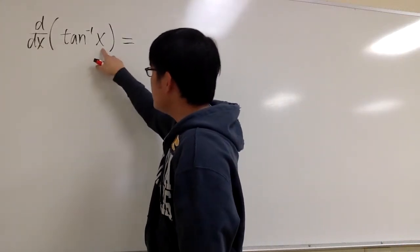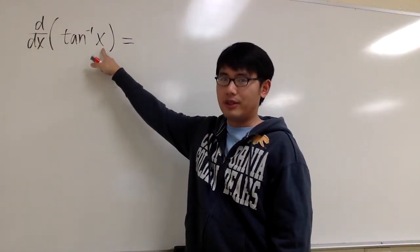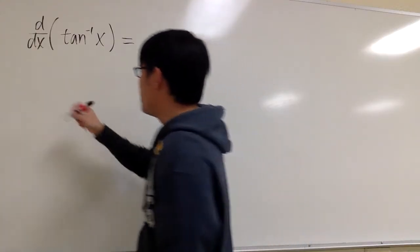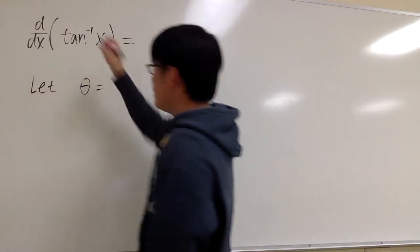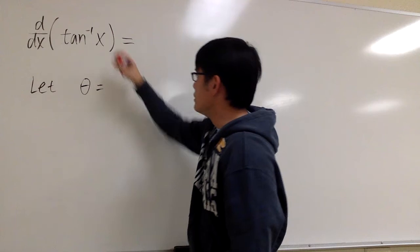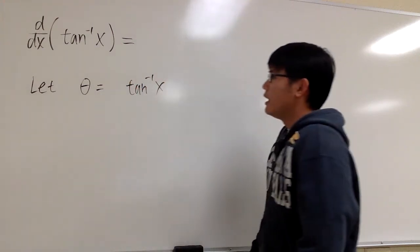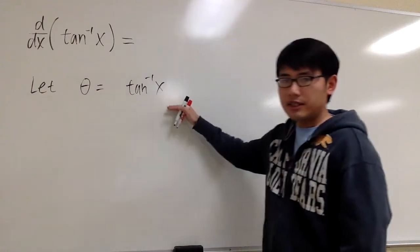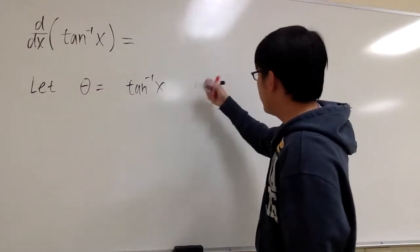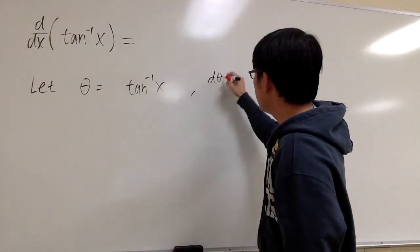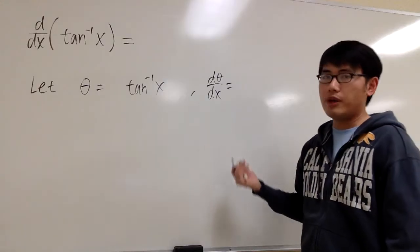First, for any inverse trig functions, this represents an angle, so that will be a good start. I will begin by saying let theta equals the angle I'm talking about, which is the inverse tangent x. My goal is to find out what dθ/dx is going to be. That's the same equation written in a different way.